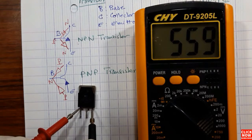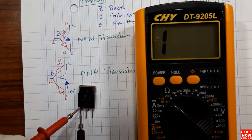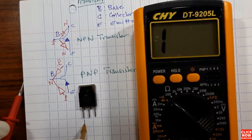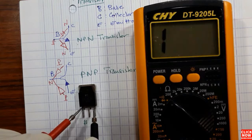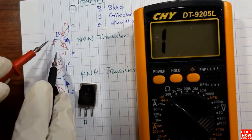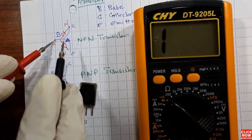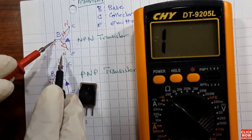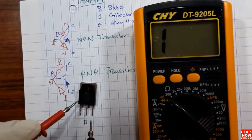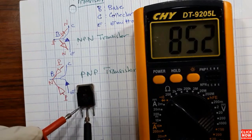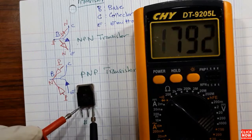This means it is an NPN transistor. This is an NPN transistor because we put the red probe of the multimeter in the base and we have a reading between base and collector, and between base and emitter. When we put the red probe in the base and the black probe once in the collector and once in the emitter, we get a reading.